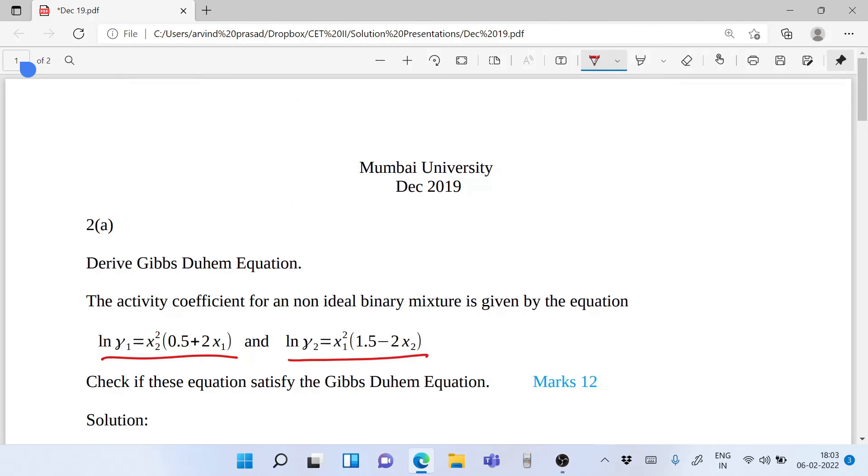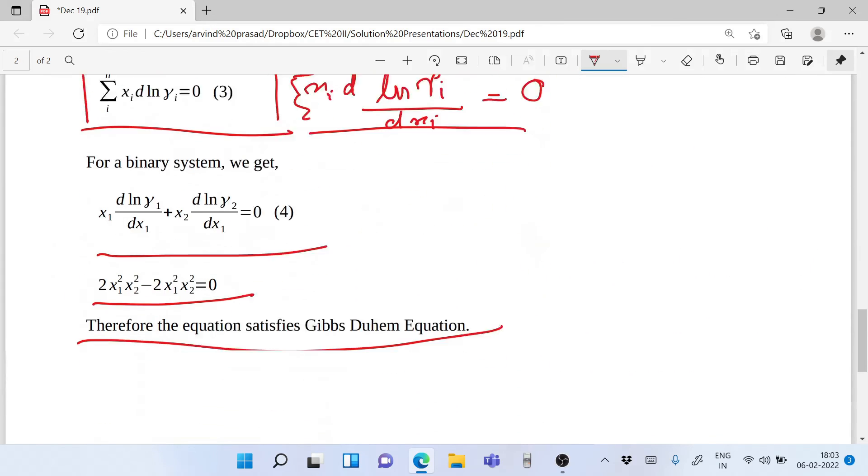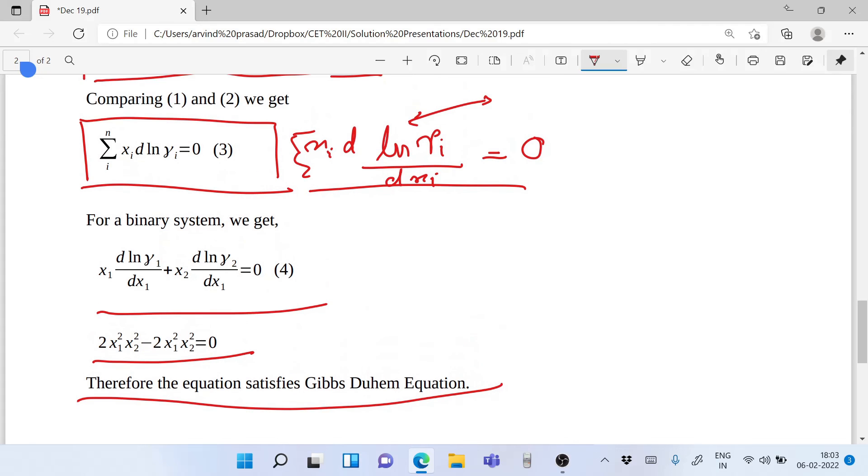This was all about deriving the Gibbs-Duhem equation for 12 marks. This is a fairly simple problem and the model given was fairly simple where one could differentiate it simply and come to the conclusion. This is Professor Arvind Prasad, thanks for listening. Once again, do subscribe to my channel. If you find these useful, send it to students who might find it useful and ask them to subscribe. That was all about chemical engineering thermodynamics, Gibbs-Duhem equation. Keep watching, there will be another lecture. Goodbye.